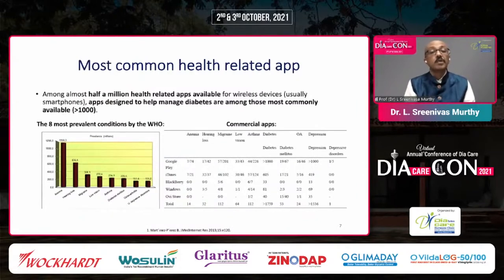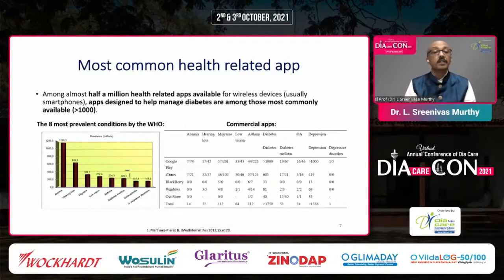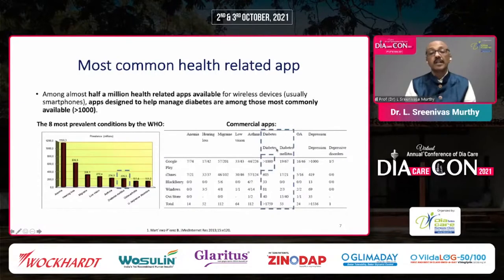Looking at this chart, there are about half a million health-related apps available for wireless devices, which are obviously smartphone-based. Apps designed to help manage diabetes are among the most commonly available — 1,759 in total. The highest number on either Google Play Store or iTunes are related to diabetes management. The WHO has listed diabetes as one of eight most prevalent conditions.